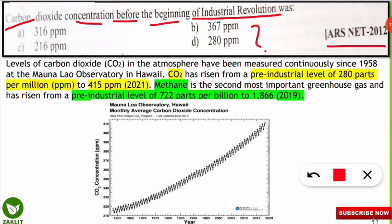The correct option is D: 280 ppm (parts per million) was the concentration of carbon dioxide in the atmosphere before the industrial revolution. You should also know that the level of carbon dioxide in the atmosphere has been measured continuously since 1958 at the Mauna Loa Observatory in Hawaii, USA. The current CO2 concentration is 415 ppm as per the 2021 report, also given by the Mauna Loa Observatory.